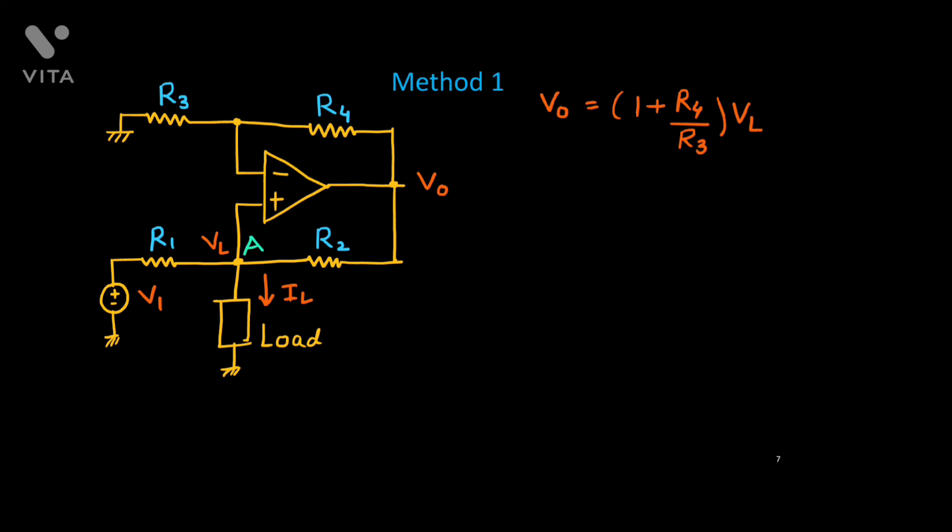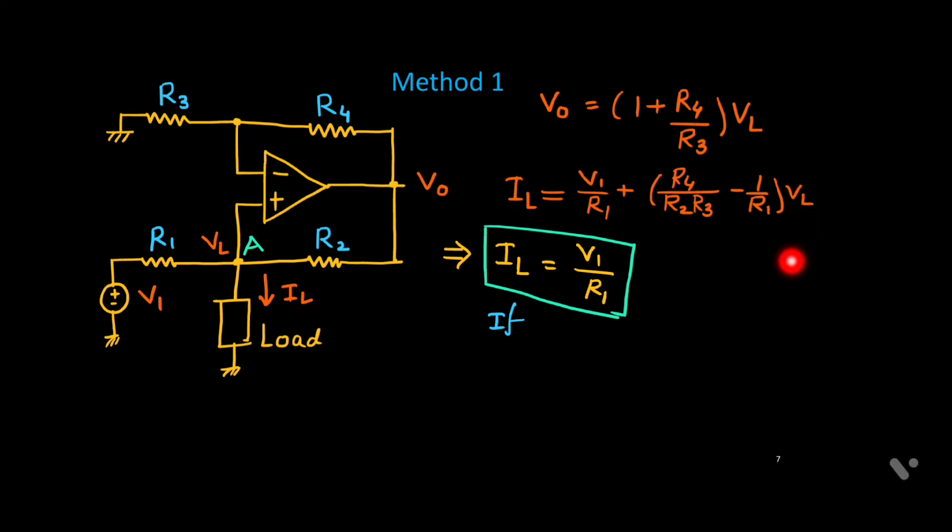This part we want to make zero, then IL will be independent of VL. Thus we can say that IL will simply equal V1 upon R1 only. The second term will vanish with the condition that R4 upon R2 times R3 minus 1 upon R1 equals zero. If you simplify it, you will get R4 upon R3 equals R2 upon R1. So if this condition is satisfied, then you will get a constant current IL for any load.